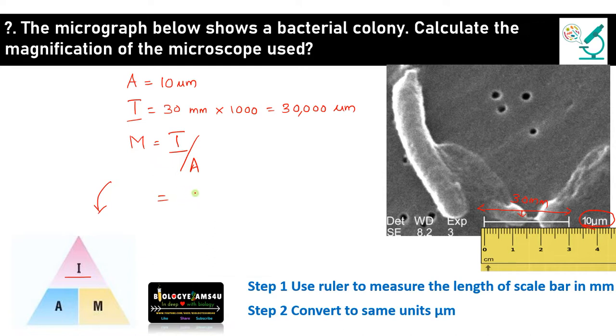So let us substitute the value. Here the image size is 30,000 micrometer by actual size is 10 micrometer. So both units are same. So no problem. So it will be the magnification is 3,000 times. So this is how we find out magnification if we are given with an image.